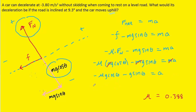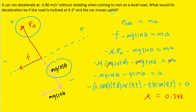Plugging in the known values: mu is 0.388, g is 9.8 m/s², and the incline angle is 9.3 degrees. Making sure the calculator is in degree mode and evaluating the expression, we get approximately negative 5.34 m/s² for the acceleration of the car going up the incline.